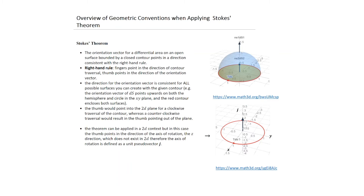Now, what about the geometric conventions when applying Stokes Theorem? We're going to have a 3D version and a 2D version, and this one is a little more complicated because it involves vectors all the way. The little picture to your right at the top shows a contour in red, basically going in a counterclockwise direction, so you should be using your right hand. The orientation vector for a differential area on an open surface—not a closed surface—bounded by a closed contour points in a direction consistent with the right-hand rule. You let the fingers point in the direction of the contour traversal, which is counterclockwise, and the thumb points in the direction of the orientation vector.